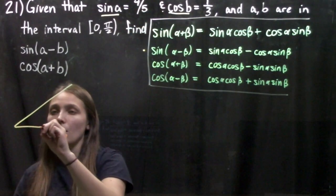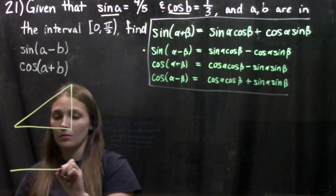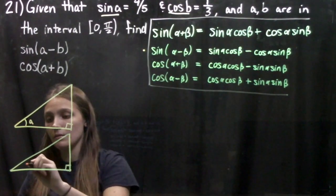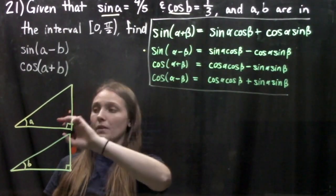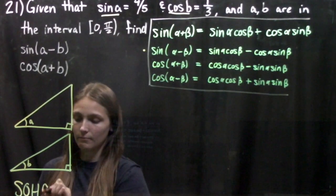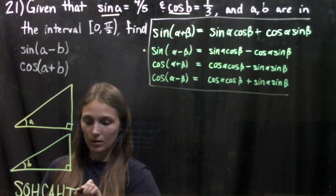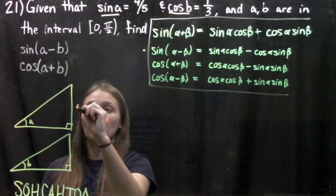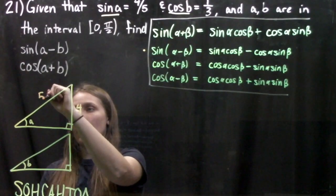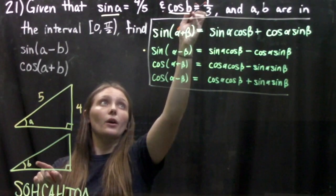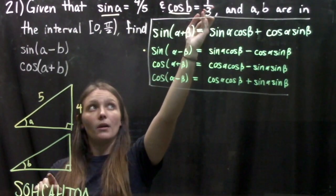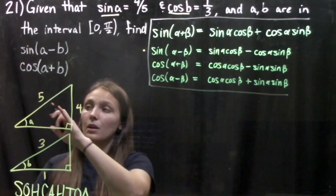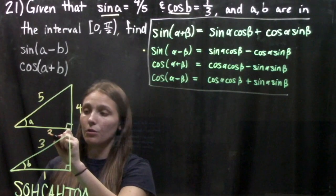We'll draw those triangles and call them angle A and angle B. Using SOHCAHTOA, sine of A is opposite over hypotenuse. So for angle A, the opposite side is 4 and the hypotenuse is 5. For angle B, cosine of B is adjacent over hypotenuse, so we have 1 over 3. We can complete triangle A right away — this is a traditional 3-4-5 triangle, so the adjacent side is 3.